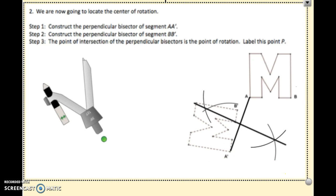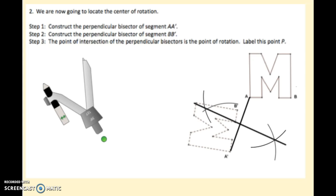Now I want you to do the same thing, but I want you to do it for B and B prime. So on your paper, connect B and B prime. I'm going to hit pause. I want you to construct the bisector and then give me a thumbs up when you feel like you got it.